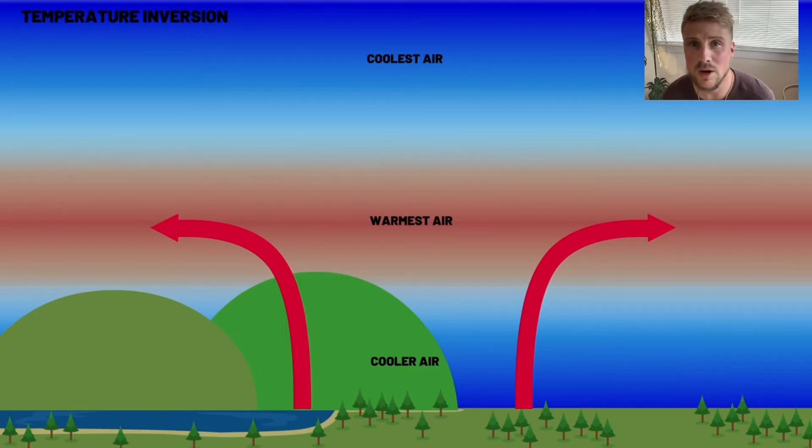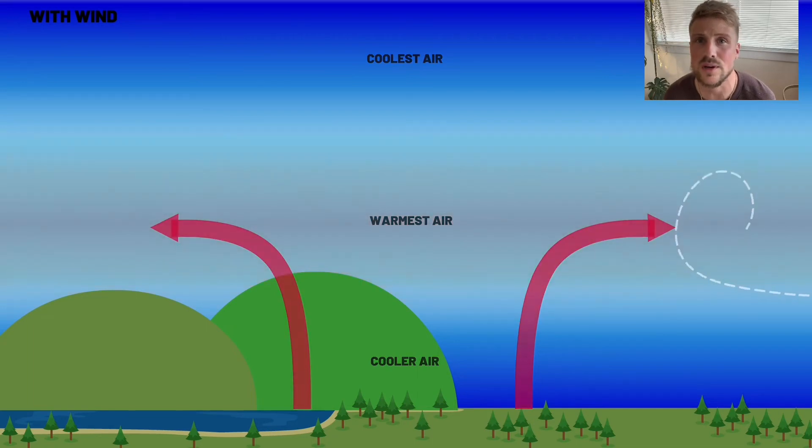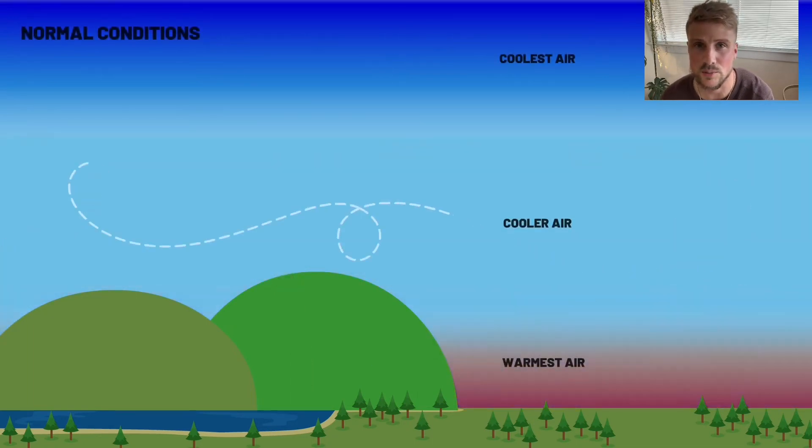With wind or unstable conditions, the warm air is dispersed horizontally and vertically and mixed into the cooler air, causing normal temperature lapse conditions to remain.